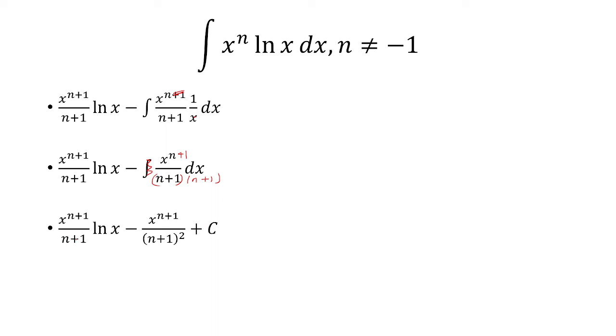This is the general solution for the integral of x^n ln(x). Now we can solve for the integral of x^5 ln(x) dx. Clearly, n is 5 here. Plug in n equals 5 into this equation. Simplify and get our final answer: x^6/6 times ln(x) minus x^6/36 plus c.